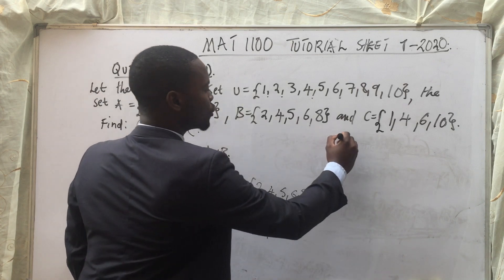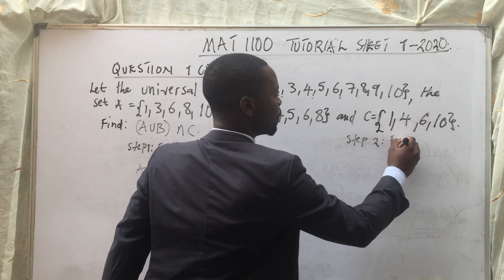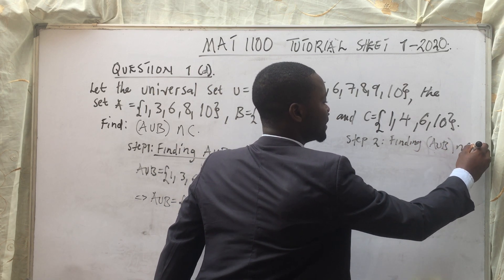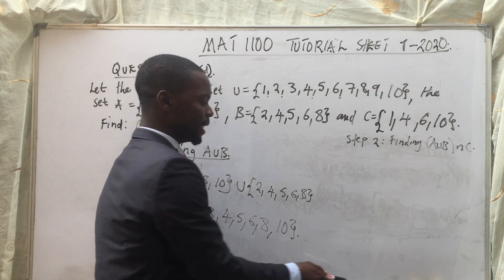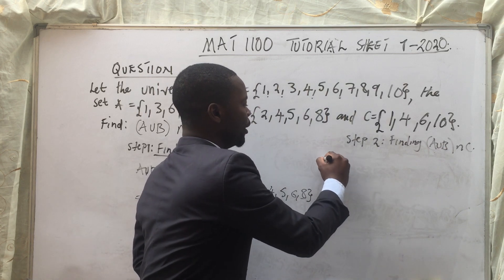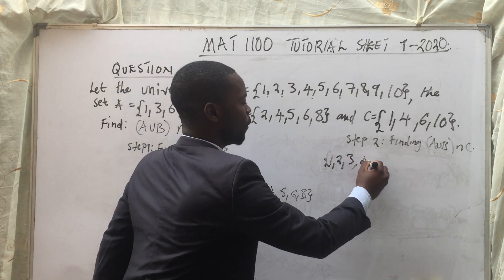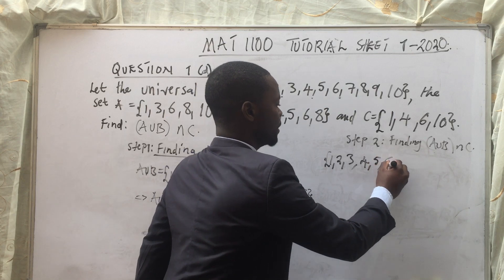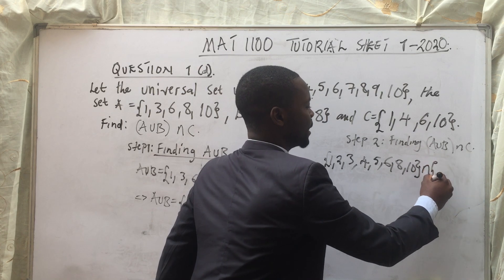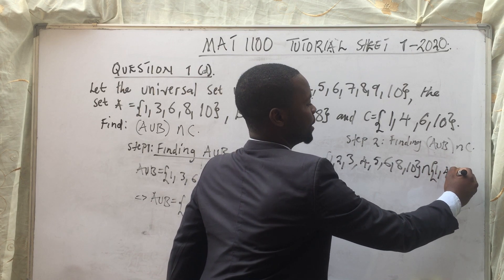The last step, which I'll call Step 2, will involve now finding A union B intersection C. We know what A union B is. So A union B, we have calculated to be {1, 2, 3, 4, 5, 6, 8, and 10}. And then we have got intersection. Then what is set C? Set C, we have got {1, 4, 6, and 10}.